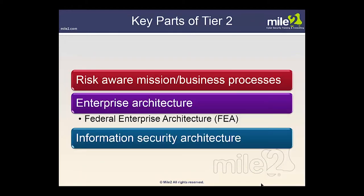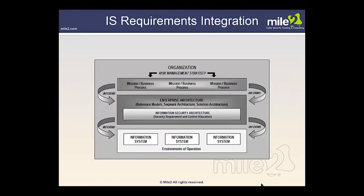Tier 2 also involves establishing an enterprise architecture with embedded information security architecture that provides cost-effective and efficient information technology solutions consistent with the organization's strategic goals and objectives, along with a way to measure performance. Key parts of Tier 2 include mission business processes that are risk-aware, the overall enterprise architecture — called the Federal Enterprise Architecture (FEA) — as well as information security architecture. Looking at IS requirements integration, we start with the organization's risk management strategy, moving through mission business processes to enterprise architecture and then to the information system.